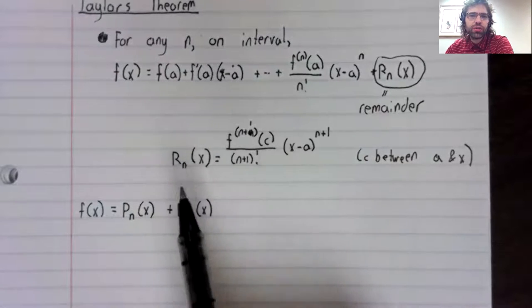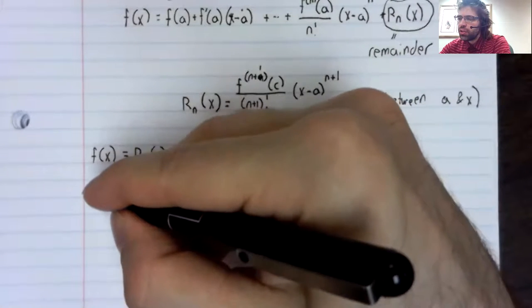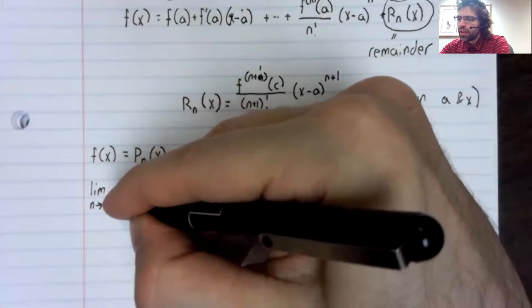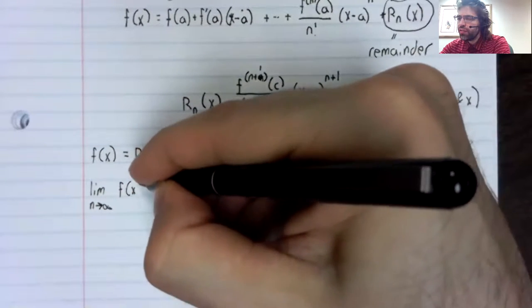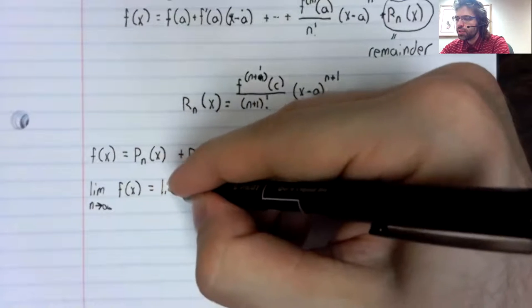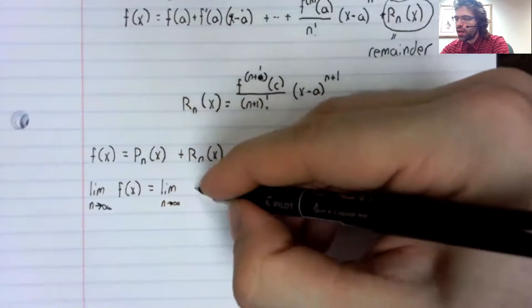And now let's take the limit as n approaches infinity of both sides.